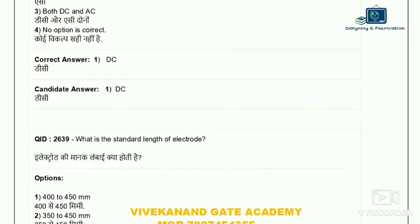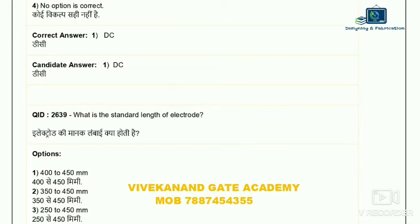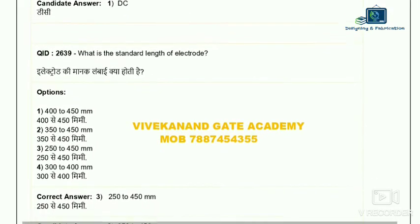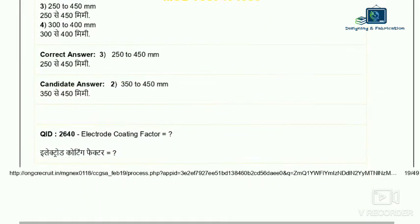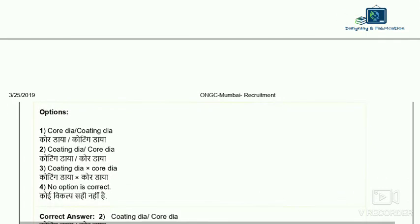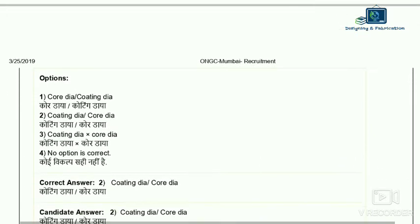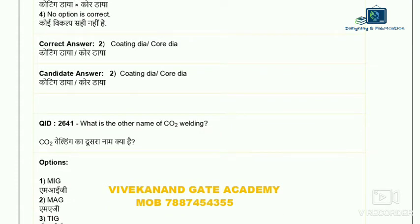Question 39: what is the standard length of an electrode? The standard length options are 350 mm and 450 mm. The correct answer is 350 to 450 mm. Question 40: what is the electrode coating factor? The coating factor is the ratio of coating diameter to core wire diameter. The correct answer is number two.